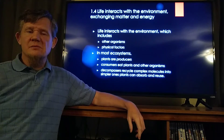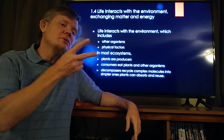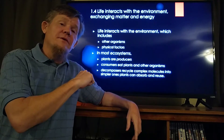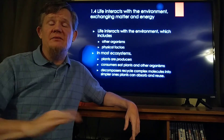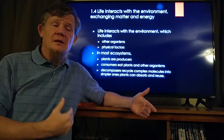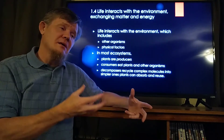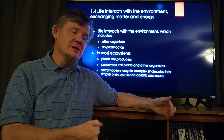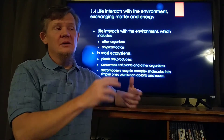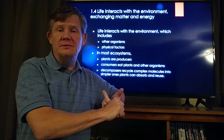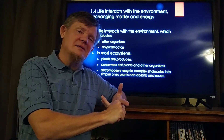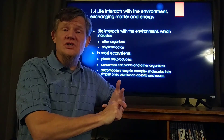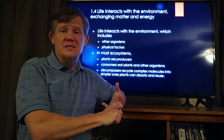Most ecosystems have at least two different groups of organisms. The first group you always have to have is a producer. Producers make food from nonliving sources — for example, plants. Plants take water from the ground, carbon dioxide from the air, and energy in the form of light from the sun.